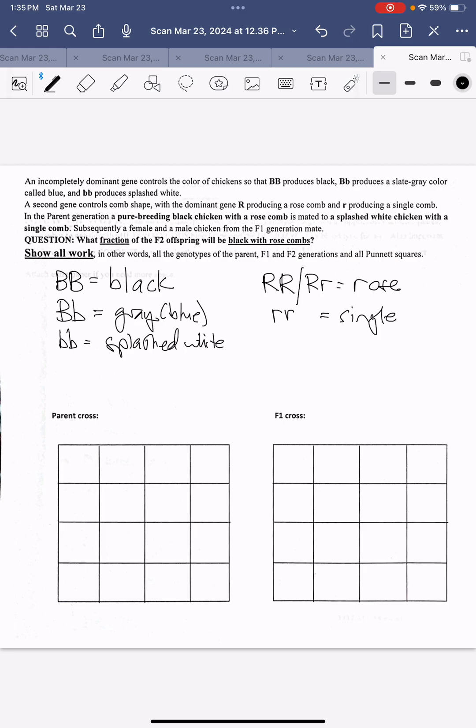In the parent generation, a pure breeding black chicken with a rose comb is mated to a splashed white chicken with a single comb. Let's write down the genotypes of these parents. If it's a pure breeding black chicken, it has to be big B, big B, big R, big R.